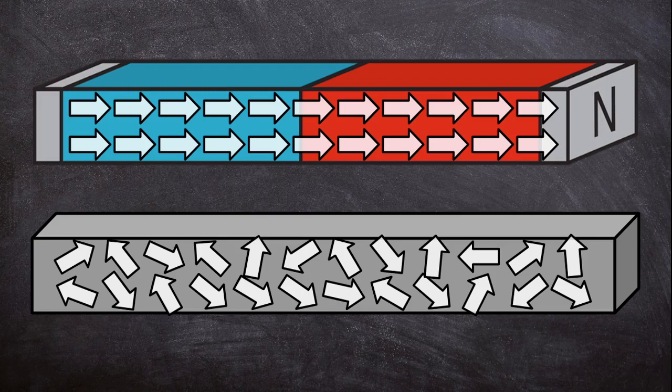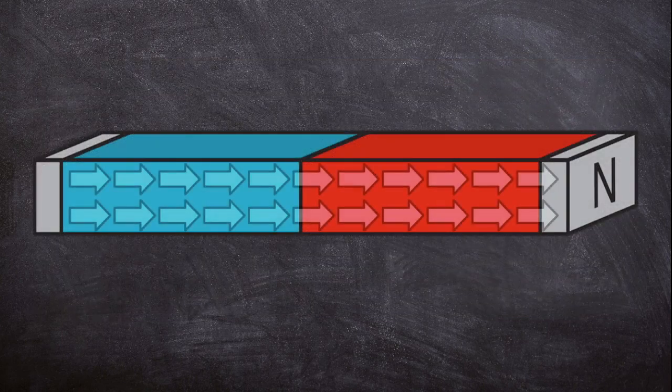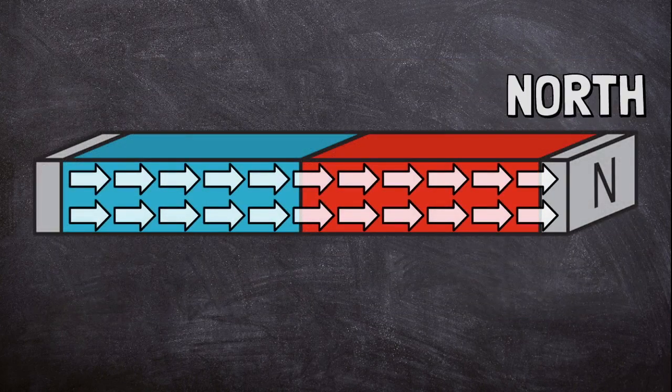When the atoms align in this way, it creates a magnetic field with a north pole and a south pole.